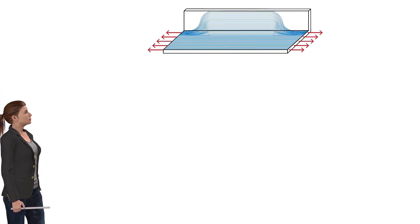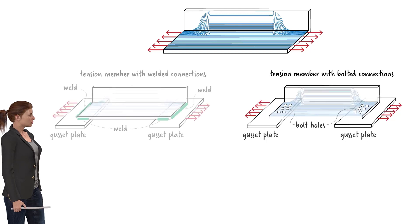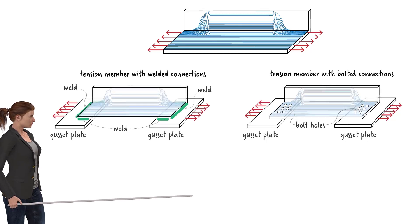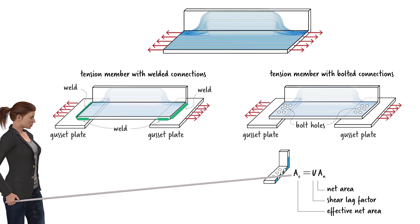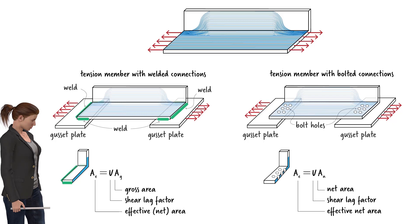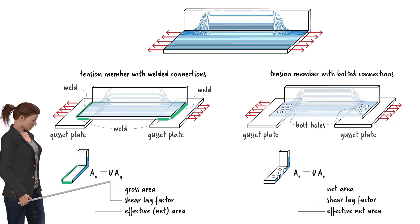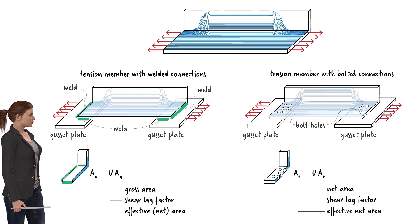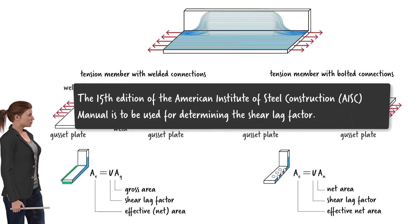A tension member has either bolted connections or welded connections. For a bolted connection, the effective area equals the shear lag factor times the net area, where the net area equals the gross area minus the area due to the holes that accommodate the bolts. For a welded connection, since no holes are present, the effective area equals the shear lag factor times the gross area of the cross-section. Both cases share the same shear lag factor, determined using the relevant provisions of the AISC specification.